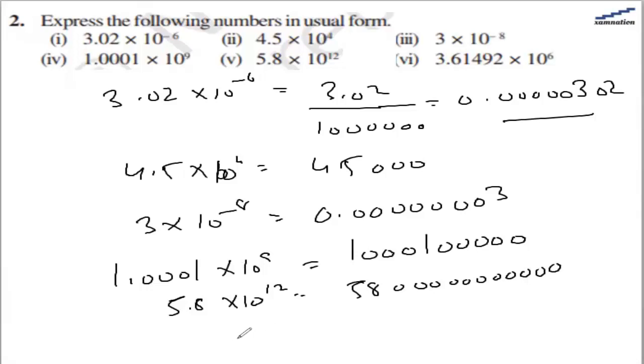In the sixth part, we have 3.61492 × 10^5, so that would be 361,492. That is the answer for the sixth part.